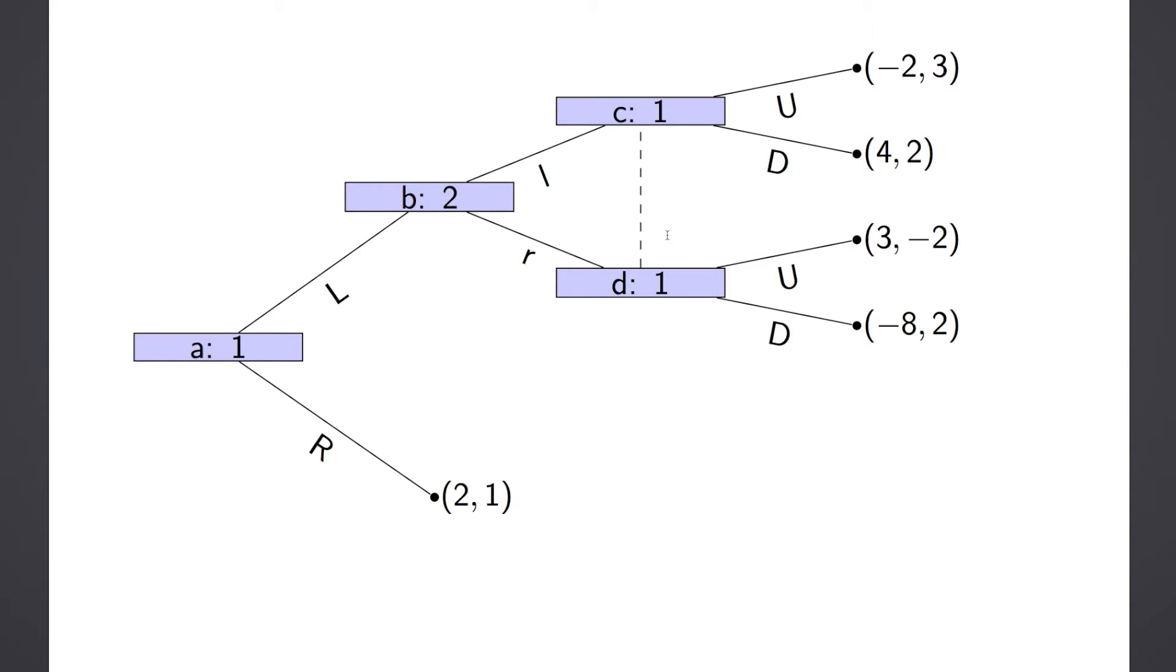So consider this extensive form game, which is nothing new. Player 1 makes decisions at this node and these two nodes, which live in the same information set. And Player 2 makes one decision here.